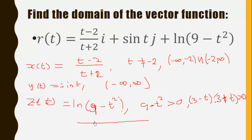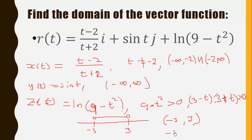Solving 9 minus t squared greater than 0 gives (3 minus t)(3 plus t) greater than 0, with boundaries at t = negative 3 and t = 3. The solution set is the open interval from negative 3 to 3. Taking the intersection of all three domains, the domain for the second R(t) is the open interval from negative 3 to negative 2.